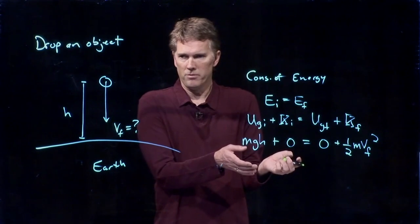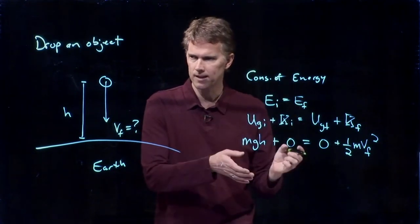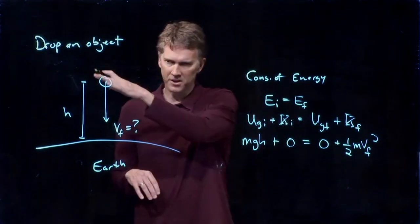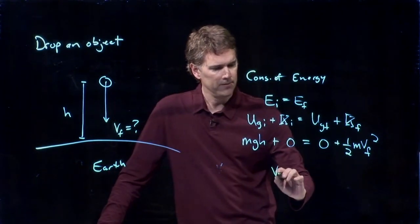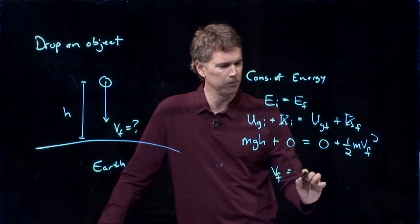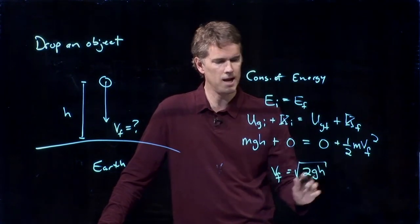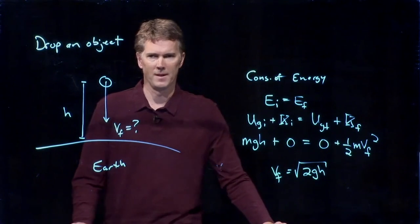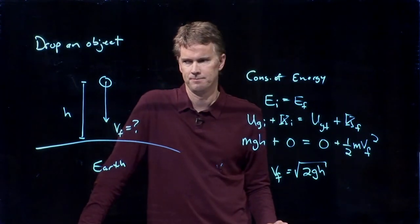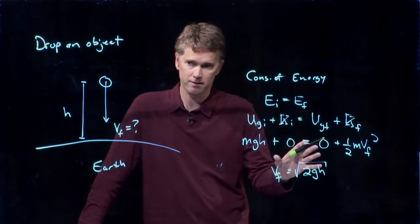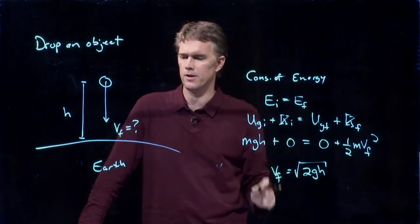And now this should look very familiar, right? This looks exactly like we did with the skier on the slope. We get Vf is equal to the square root of 2gh. Again, pretty cool and pretty straightforward, I think. Very simple derivation.